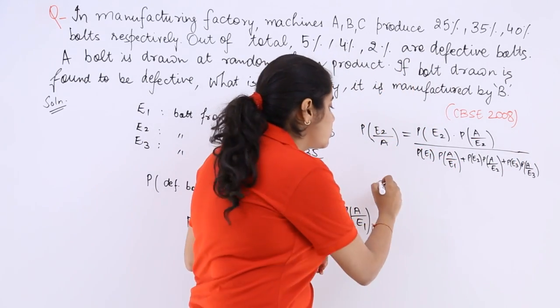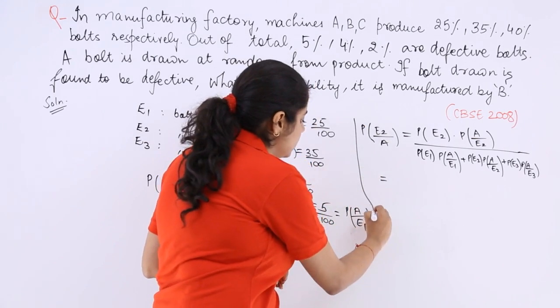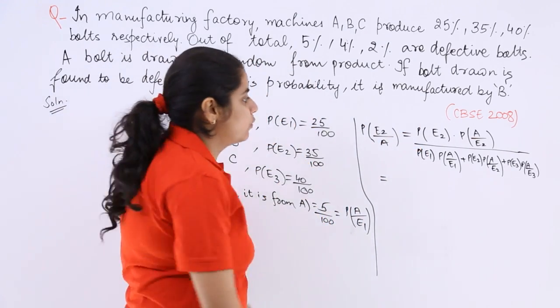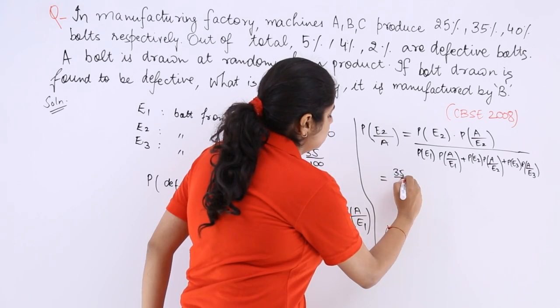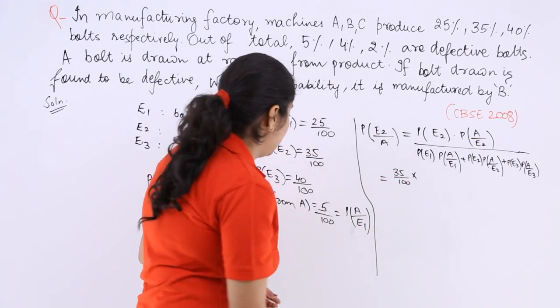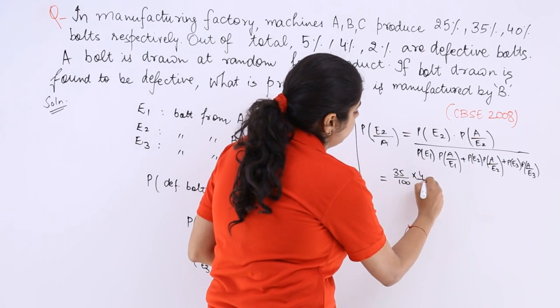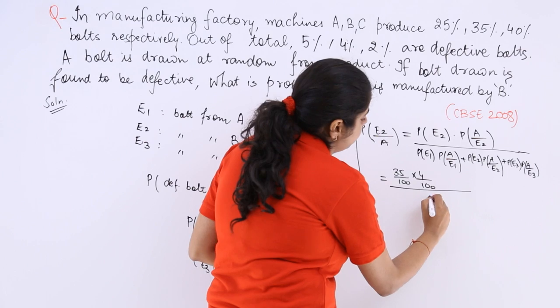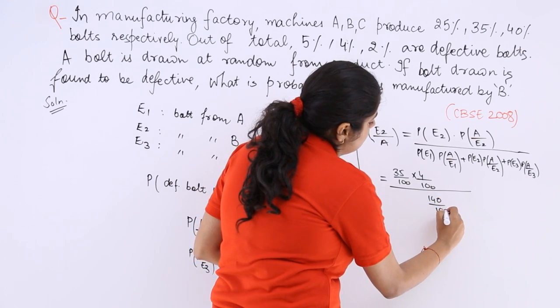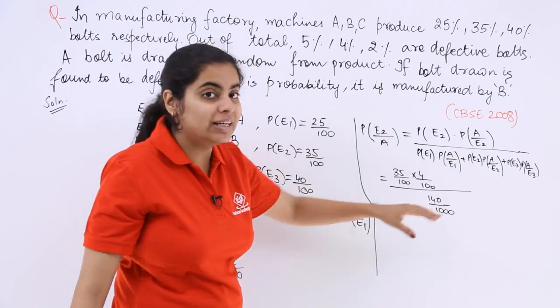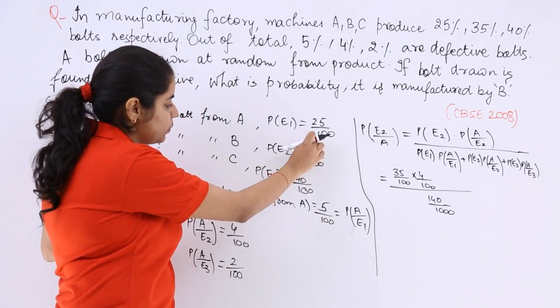Now what is the answer? Simply you can put the values and obtain the answer. So P(E2) is 35 over 100 multiplied by A over E2, so A over E2 is 4 over 100.